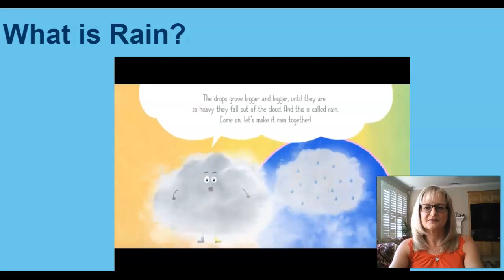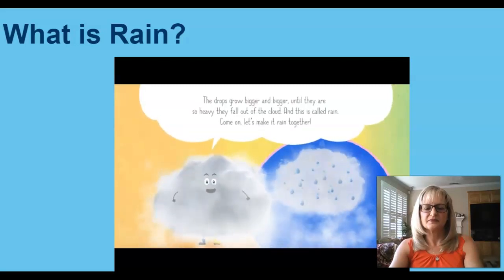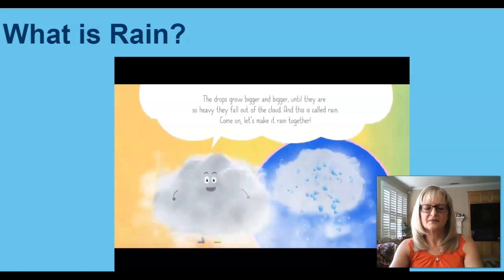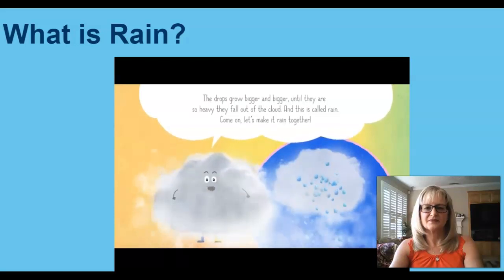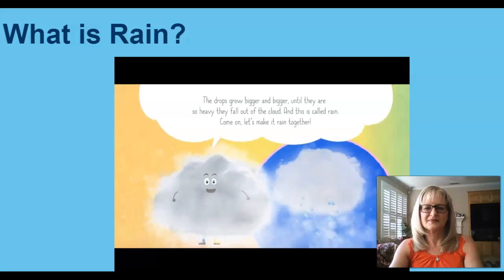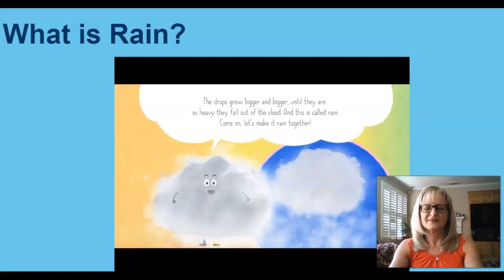More and more water particles join in from below until the cloud is so filled up that the particles snuggle together into small drops. The drops grow bigger and bigger until they are so heavy they fall out of the cloud, and this is called rain. Let's make it rain together.